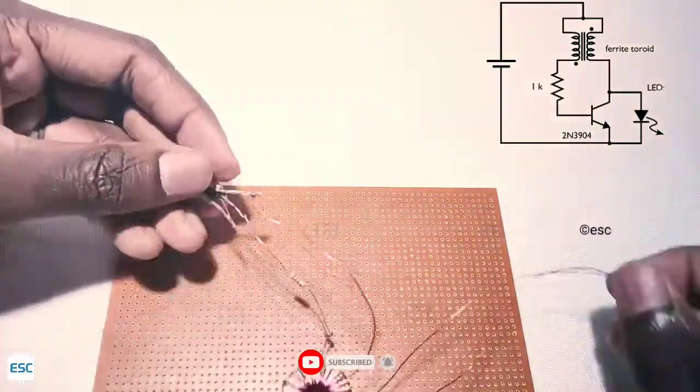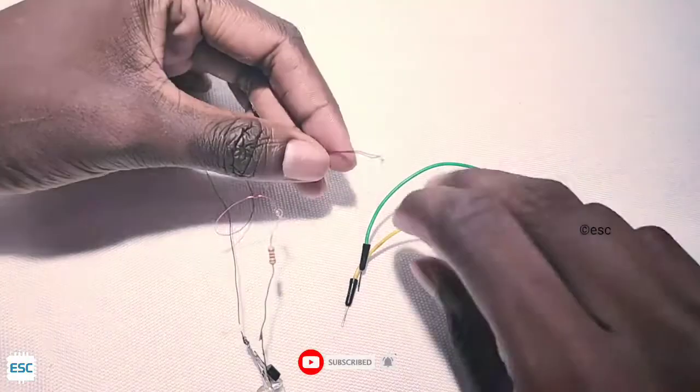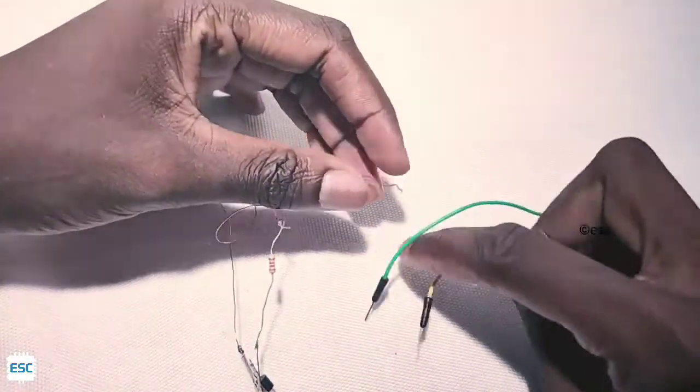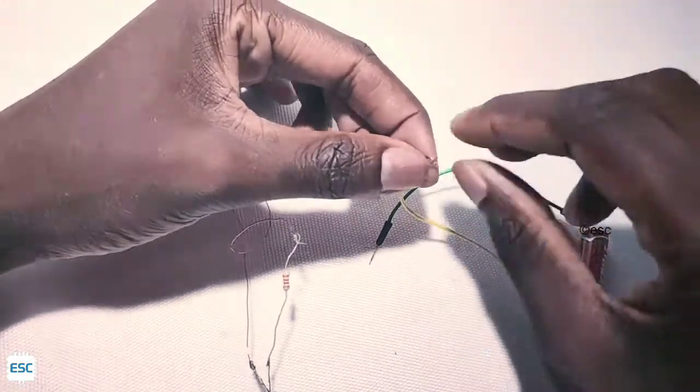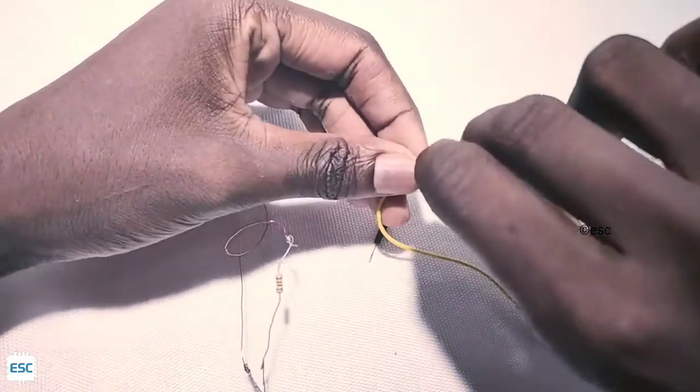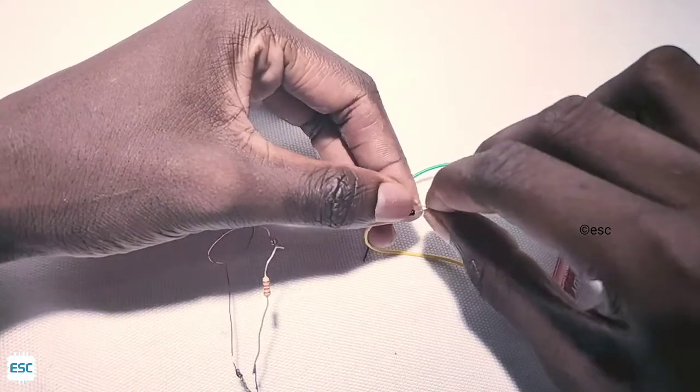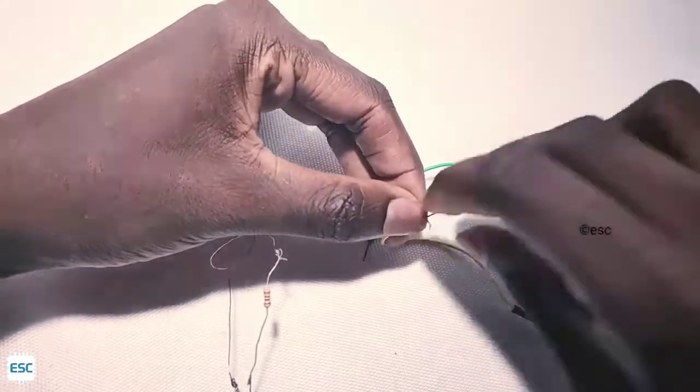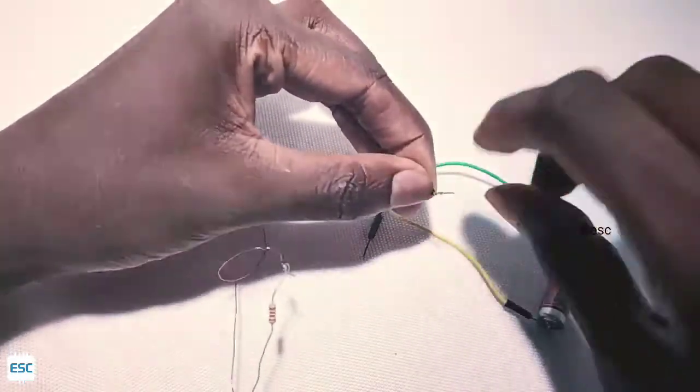If you are confused with the connection please download the circuit diagram from my blog. Now connect common point to the positive of battery and negative to emitter of the transistor. That's all about the circuit.